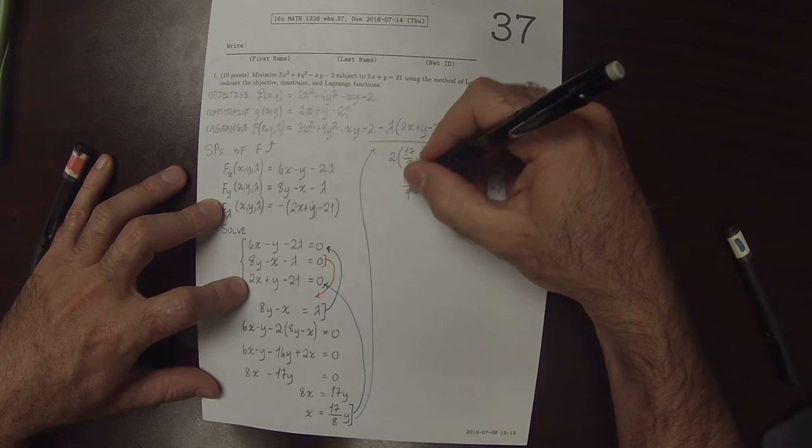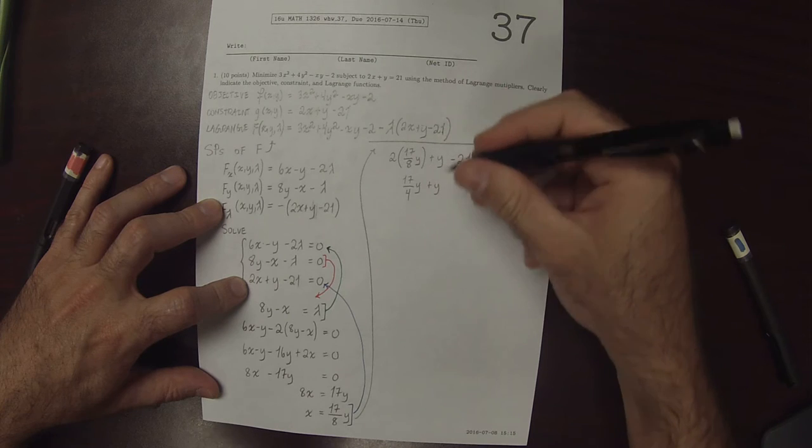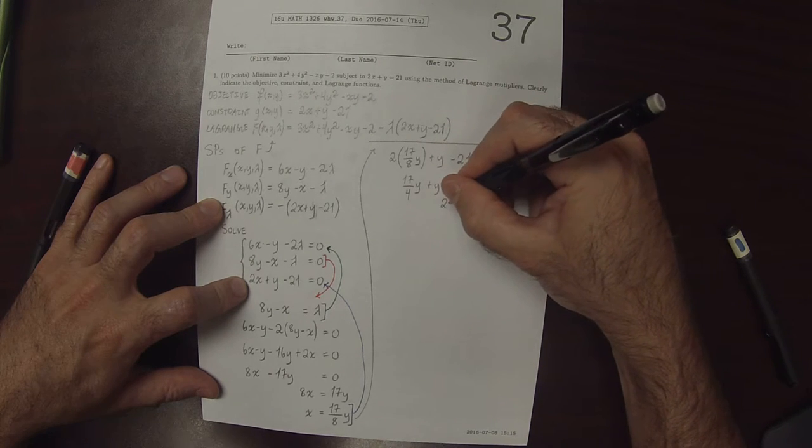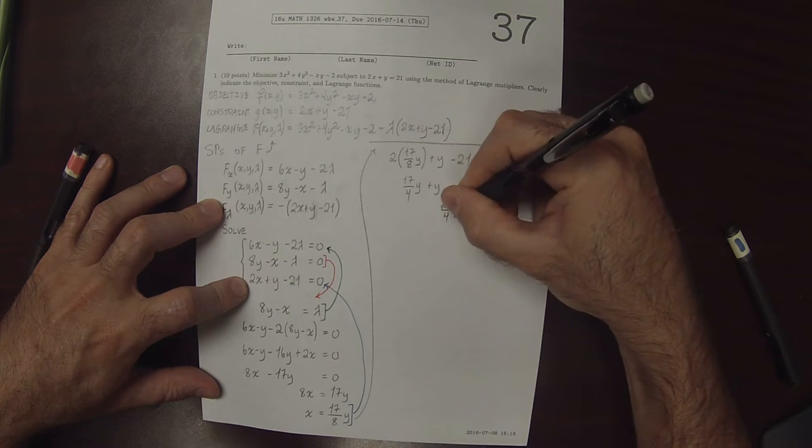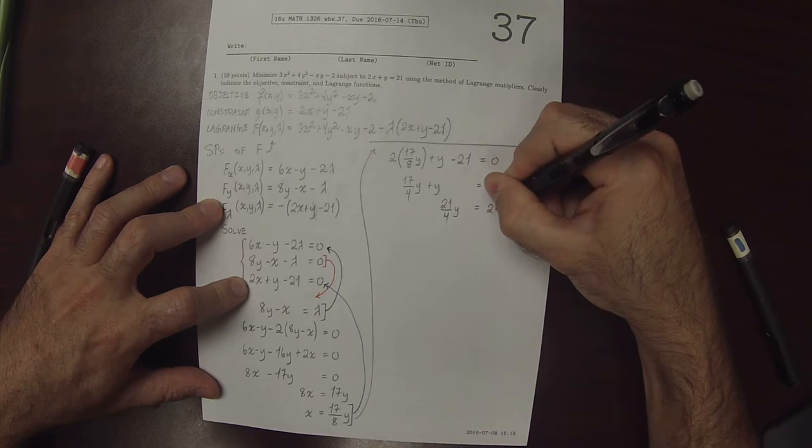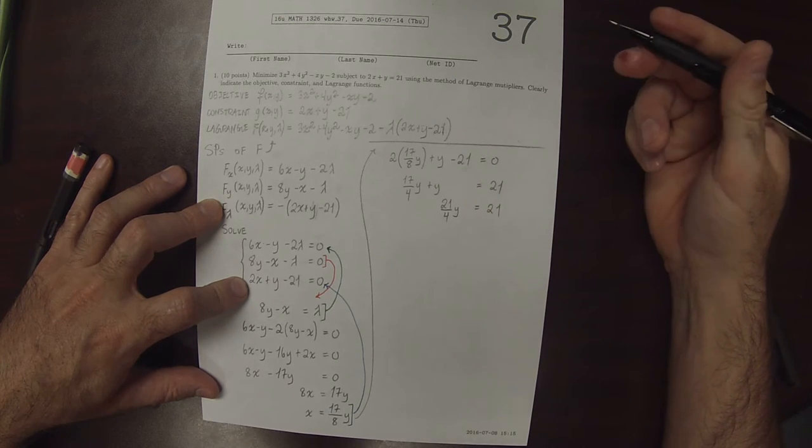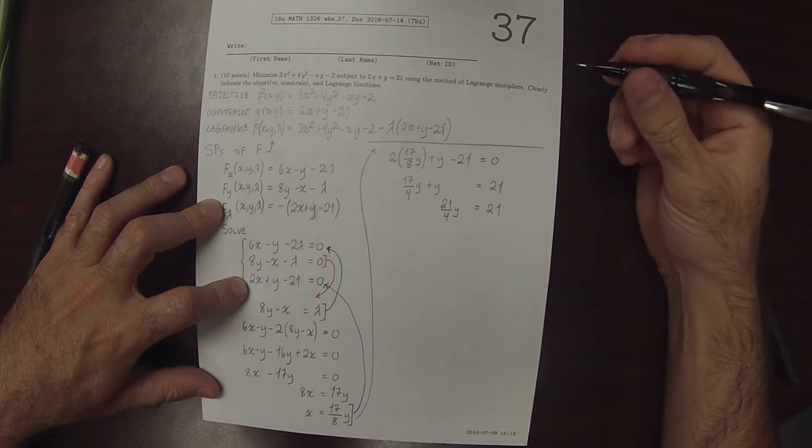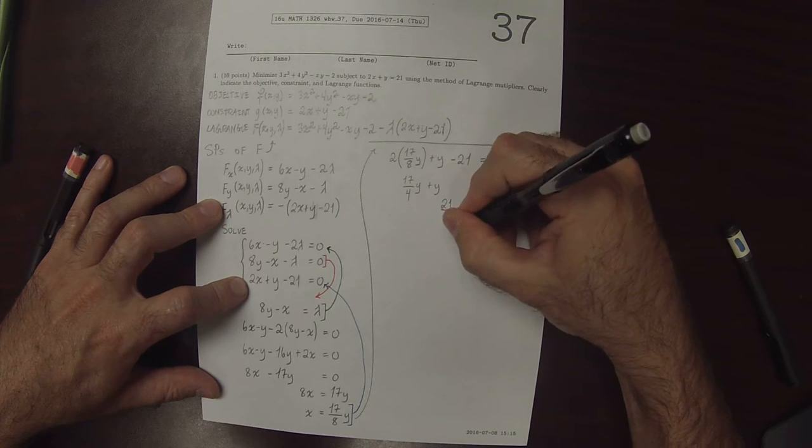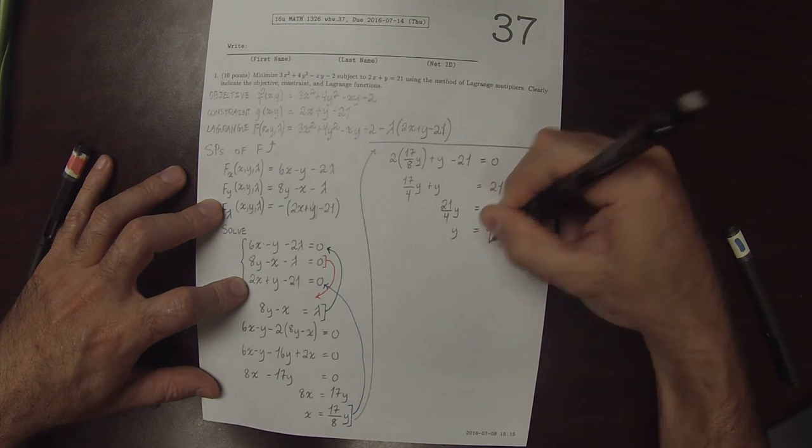So 17 over 4 plus 4 over 4 is 21 over 4y is 21. So the numbers end up working out nicely after all. So y is 4.